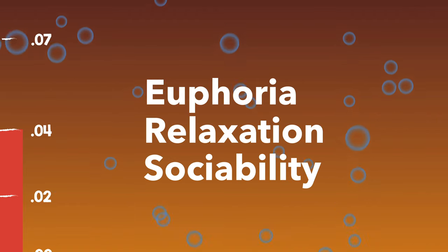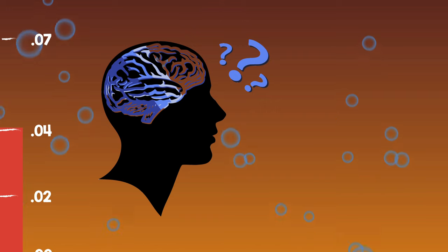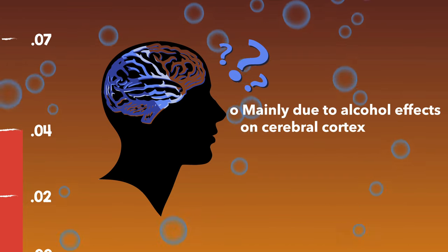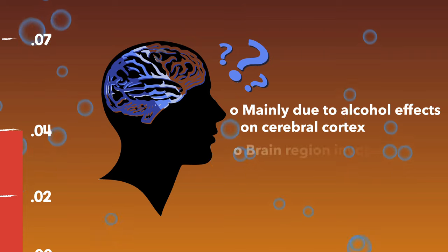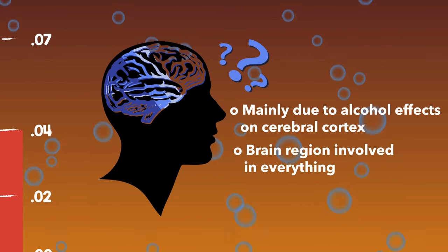Euphoria, relaxation, and sociability are still on the rise. At this stage, your inner daredevil comes out to play, and your normally impeccable memory isn't quite up to its usual standards. This is mainly thanks to alcohol's effects on the cerebral cortex, a brain region involved in everything including sensory perception, motor activity, attention, impulse control, and memory.